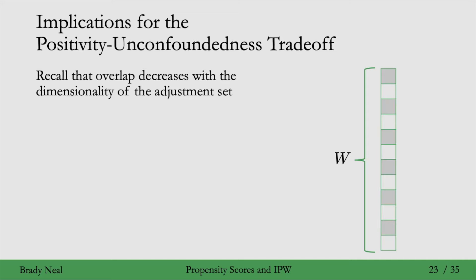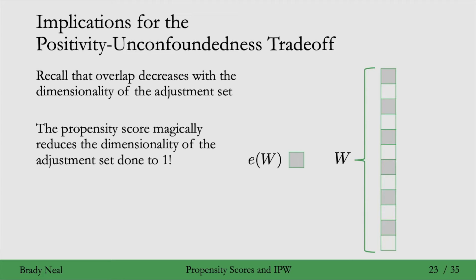Here's a super high-dimensional W. Because W is so high-dimensional, it seems likely that we'll have positivity violation. But the propensity score theorem tells us that we don't need to condition on W. We can just condition on the propensity score, which is a scalar.